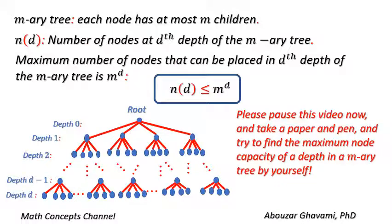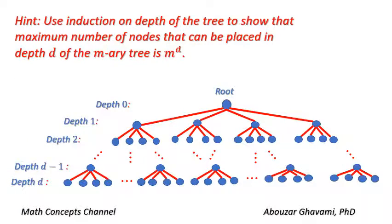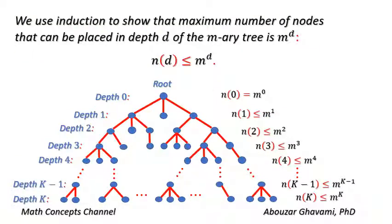Please pause this video now, take a paper and pen, and try to find the maximum node capacity of a depth in an M-ary tree by yourself. As a hint, use induction on depth in an M-ary tree to show that the maximum number of nodes that can be placed in depth D of the M-ary tree is M to the power of D. In other words, use induction to show that N(D) is less than or equal to M to the power of D.